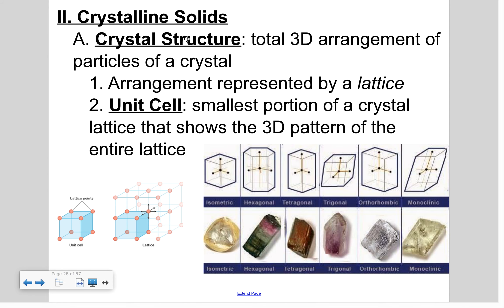Crystalline solids have a crystal structure — a 3D arrangement of particles in a crystal, with lots of different ways that arrangement can occur. The arrangement is represented by a lattice. A unit cell is the smallest possible portion of that crystal lattice structure that shows the 3D pattern. The full crystal structure is the lattice, but if you take out the smallest portion showing the 3D pattern, that's the unit cell.